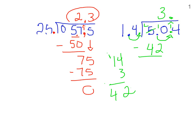And that was 3 times, so I'm going to put that above my 0. And 50 minus 42 is 8. Drop my 4 down.